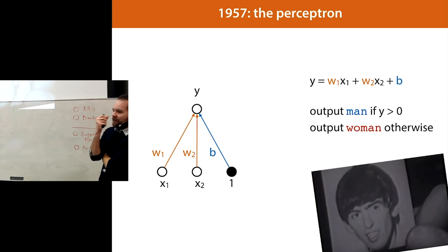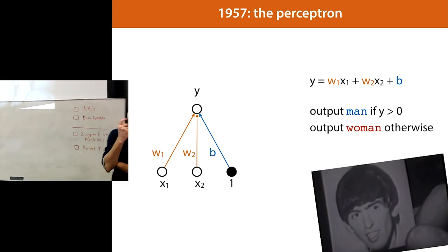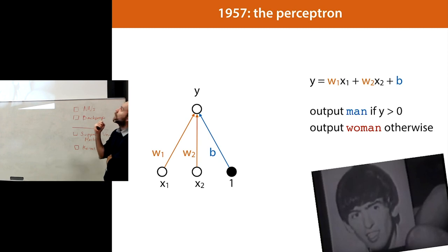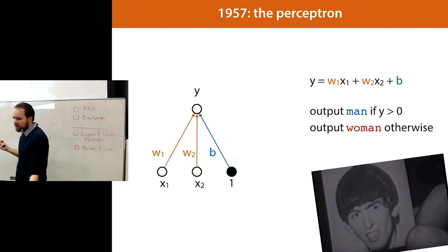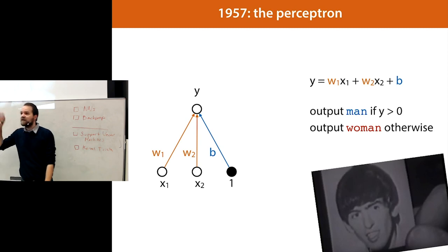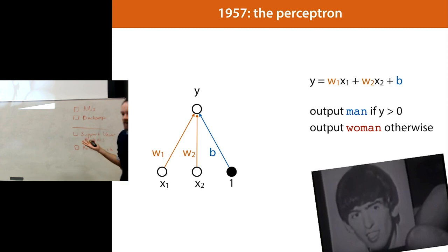The perceptron is the name for this one-neuron neural network. If the output is larger than zero we call it a man, otherwise a woman. We have to figure out how to fit these weights to a data set. Hopefully you can see that this is basically just a linear classifier — a fancy name. It's a dot product plus a bias term, and that's all it is.